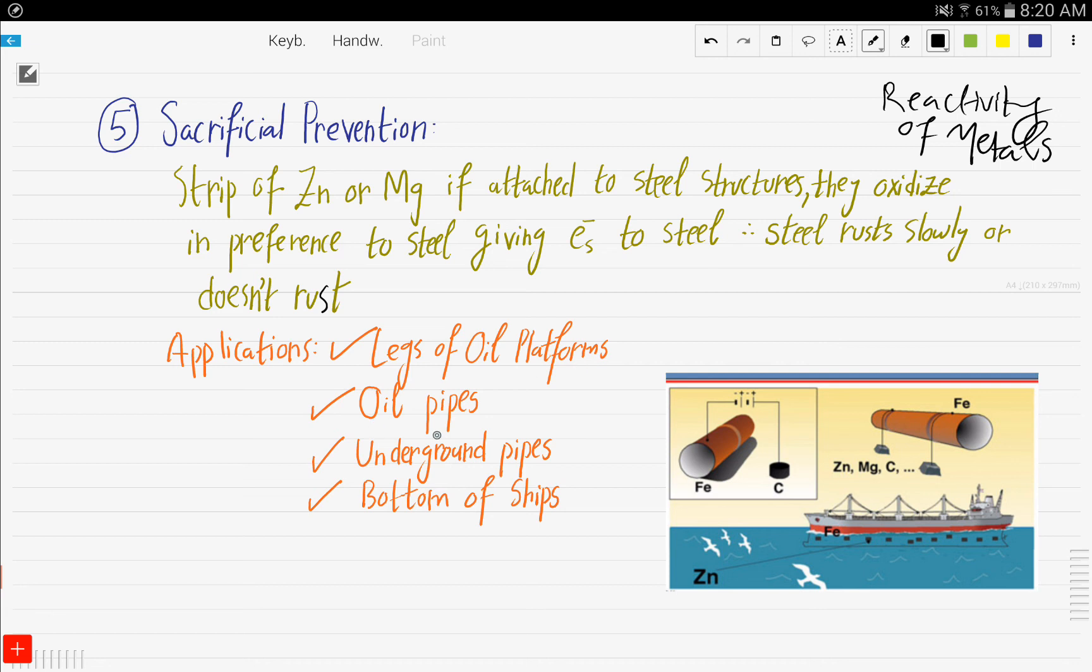Here, the bottom of the ship is iron, and we have strips of zinc attached to it. The zinc will oxidize in preference to iron, avoiding the iron from rusting and corroding the bottom of the ship. An interesting thing to know is that the name 'sacrificial' comes from the fact that zinc or magnesium sacrifice themselves for iron.